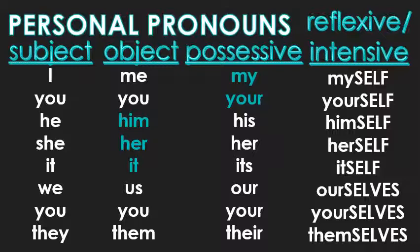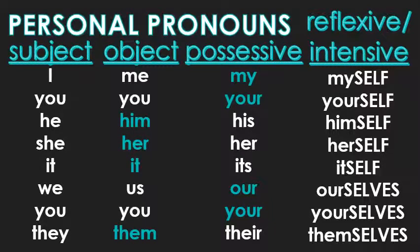Ourselves. Yourselves. Themselves. It follows that same pattern: first and second person follow the possessive pattern, but the third person is object. So just like 'him' should have an M, the third person plural form should have an M as well — 'them.' Themselves, not 'their selves.'